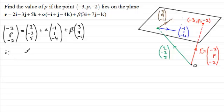So if we compare the i components, we've got -3 here equals 2, and then we've got -α, and then we've got +3β. And I'm going to rearrange this, make α the subject. So if I add α to both sides and add 3 to both sides, we're just going to get α equals 5 + 3β. Okay, so I'll call that equation 1.